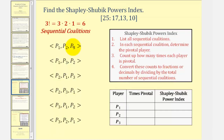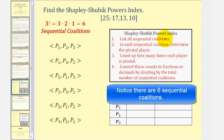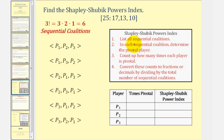Now let's find the Shapley-Shubik Power Index for the given weighted voting system. Notice there are three players, and therefore there are three factorial, or six, sequential coalitions. The six sequential coalitions are: players one, two, and three; players one, three, and two; players two, one, and three; players two, three, and one; players three, one, and two; and players three, two, and one. We've completed step one. Now for each sequential coalition we'll determine the pivotal player — the player that changes the coalition from not meeting quota to meeting quota.